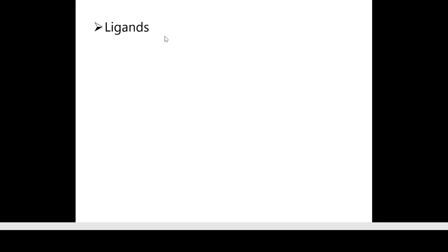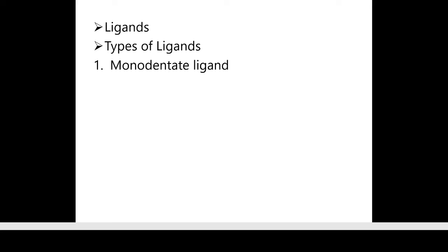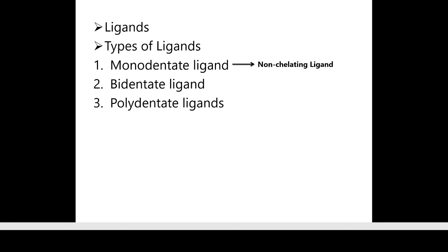What is a ligand? A ligand is any species — atom or ion — which is able to donate a lone pair of electrons to a central metal atom to form a coordinate bond with it. There are three main types of ligand: monodentate ligand, also called non-chelating ligand; bidentate ligand; and polydentate ligand. Bidentate and polydentate ligands are also called chelating ligands because they are able to form chelate complexes.